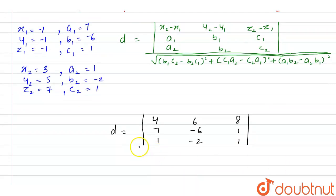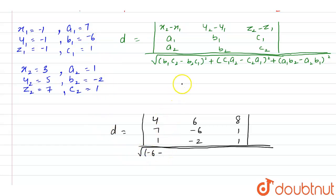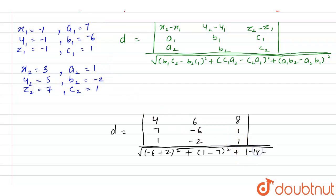The denominator is the square root of (b1c2 - b2c1)² + (c1a2 - c2a1)² + (a1b2 - a2b1)². Substituting: b1c2 = (-6)(1) = -6, minus b2c1 = (-2)(1) = -2, so -6 - (-2) = -4. Then c1a2 = (1)(1) = 1, minus c2a1 = (1)(7) = 7, giving 1 - 7 = -6. Then a1b2 = 7×(-2) = -14, minus a2b1 = 1×(-6) = -6, giving -14 - (-6) = -8.